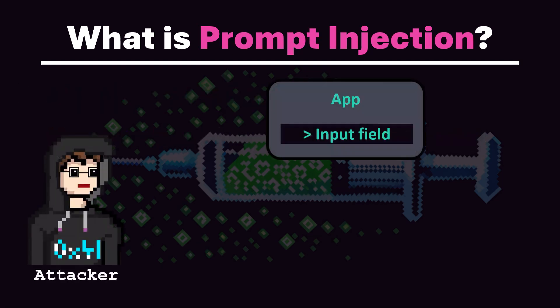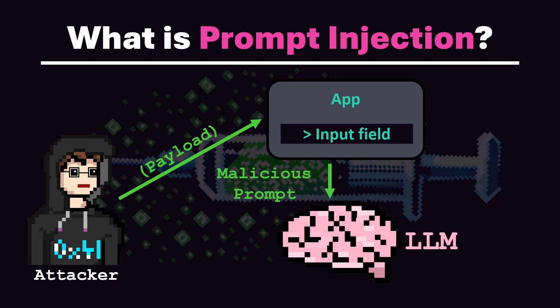The attacker inputs a malicious payload in the form of a prompt into the application's input field. This is sent to the large language model linked to the app, and the model then delivers a manipulated response based on the malicious prompt.